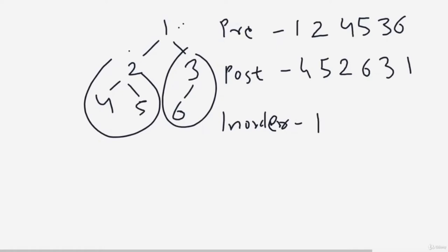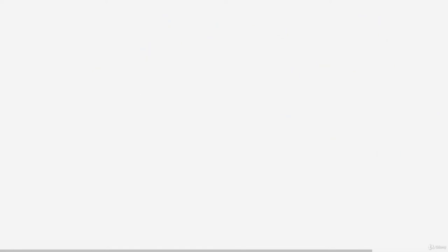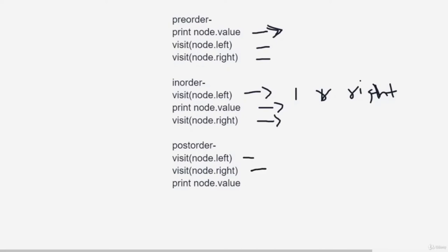For inorder (left, root, right): start with root, go down to left subtree — at node 2, go further left to 4, then root 2, then right 5; then back to main root 1; then right subtree with left 6, root 3, no right. Now let's look at the pseudocode: for preorder, display root first, then recurse left, then right. For inorder, recurse left first, print root, then recurse right. For postorder, recurse left, recurse right, then print root. These are recursive implementations.